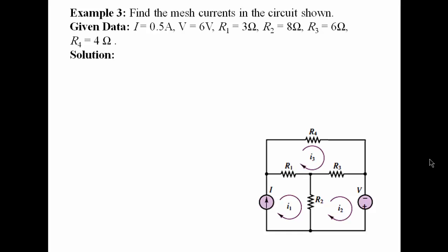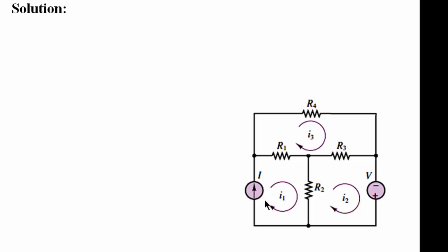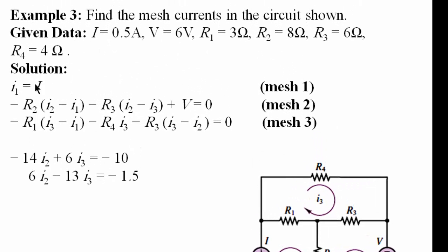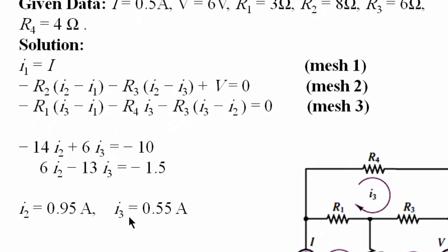Example three: find the mesh currents in the circuit shown. This example is similar to the previous one; however, in this loop we have a current source with value I. So we can directly say I1 equals I. For the second and third equations, we follow KVL as before. We already have I equal to 0.5 ampere, and the values of R1, R2, R3, R4, and V. Substituting gives only two equations, since I1 is already 0.5 A, and solving them yields I2 and I3.